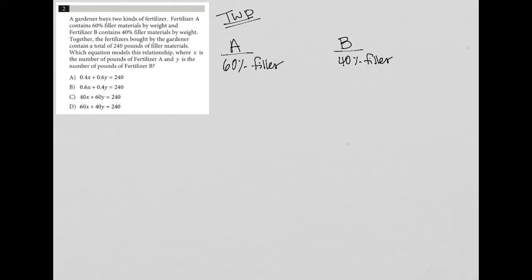Together, the fertilizers bought by the gardener contain a total of 240 pounds of filler material. So based on that, A plus B is equal to 240 pounds filler. Then it goes on to say,